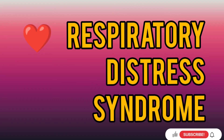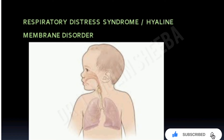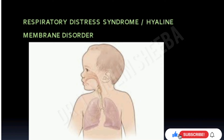Welcome back to Evergreen Nurses channel. Today we will cover one important topic: Respiratory Distress Syndrome. It is a common problem that mainly occurs among preterm babies — those born before 35 weeks of gestation. This Respiratory Distress Syndrome is otherwise called Hyaline Membrane Disorder.